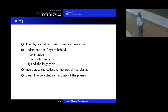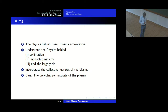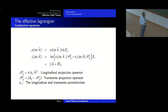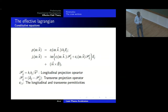What we hope to understand is: describe the physics behind collimation, monochromaticity, and the large yield by incorporating the collective features. The clue, as I told you, is the dielectric permittivity of the plasma. So now the technical part starts. I have 38 minutes.